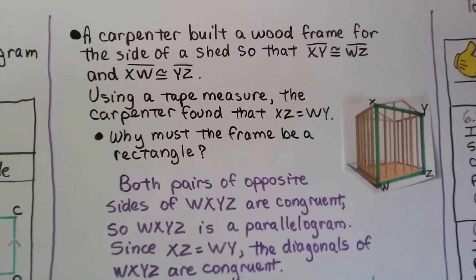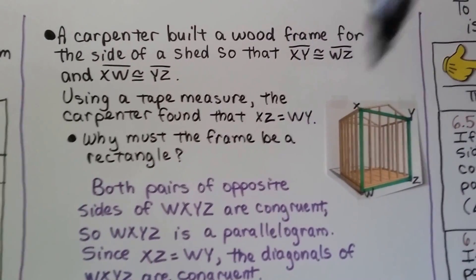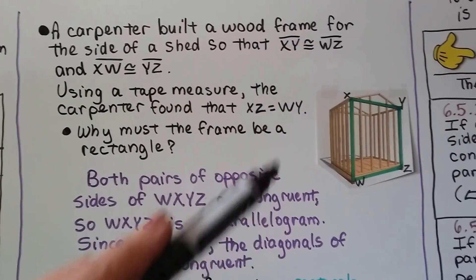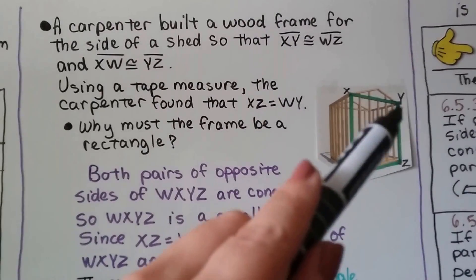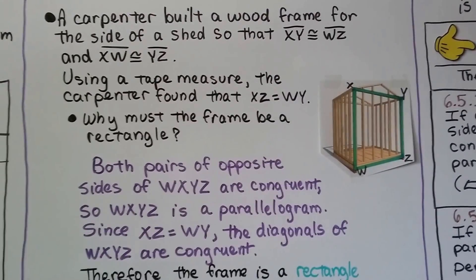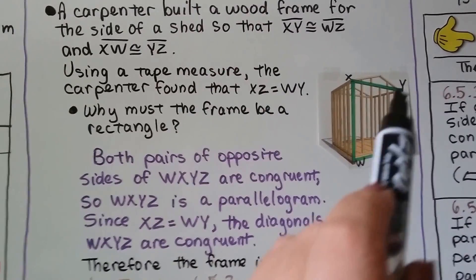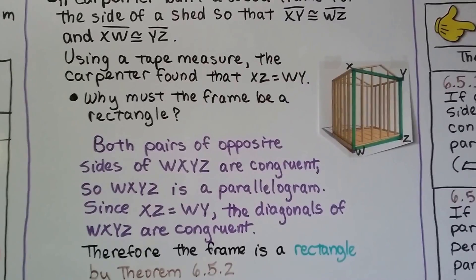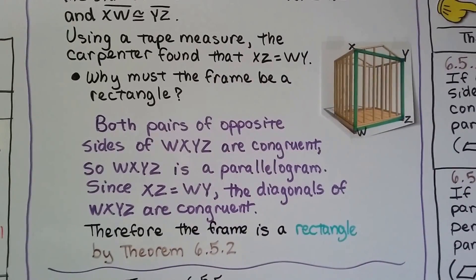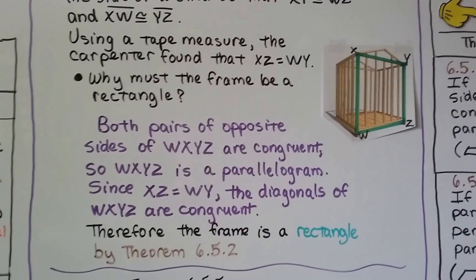A carpenter built a wood frame for the side of a shed so that XY, along the top, is congruent to WZ, along the bottom, and XW, on the left, is congruent to YZ, on the right. Using a tape measure, the carpenter found that diagonal XZ was equal to diagonal WY. Why must the frame be a rectangle? Both pairs of opposite sides of WXYZ are congruent, so WXYZ is a parallelogram.